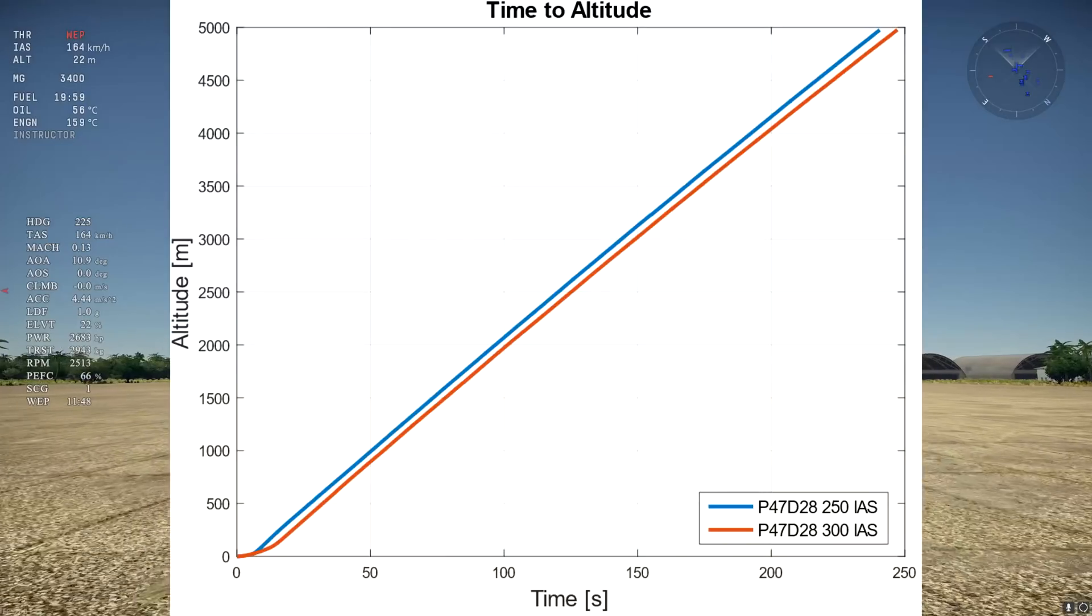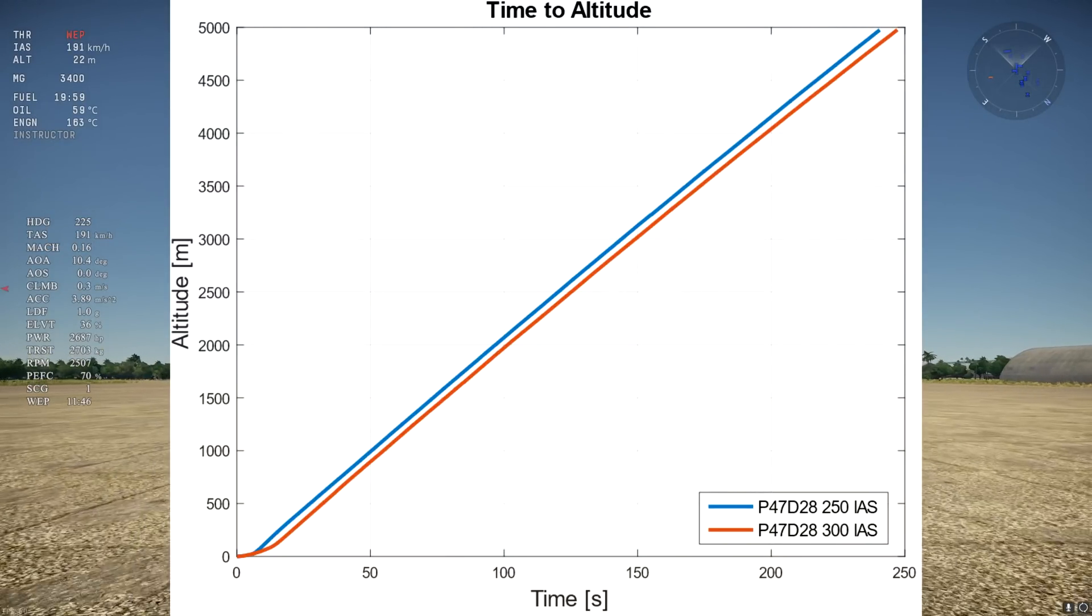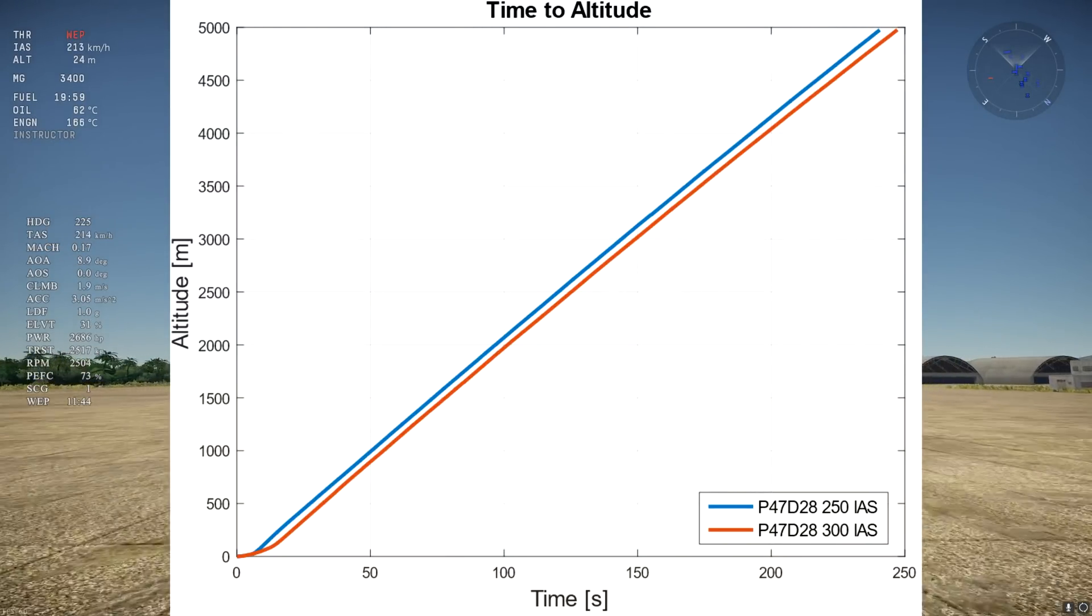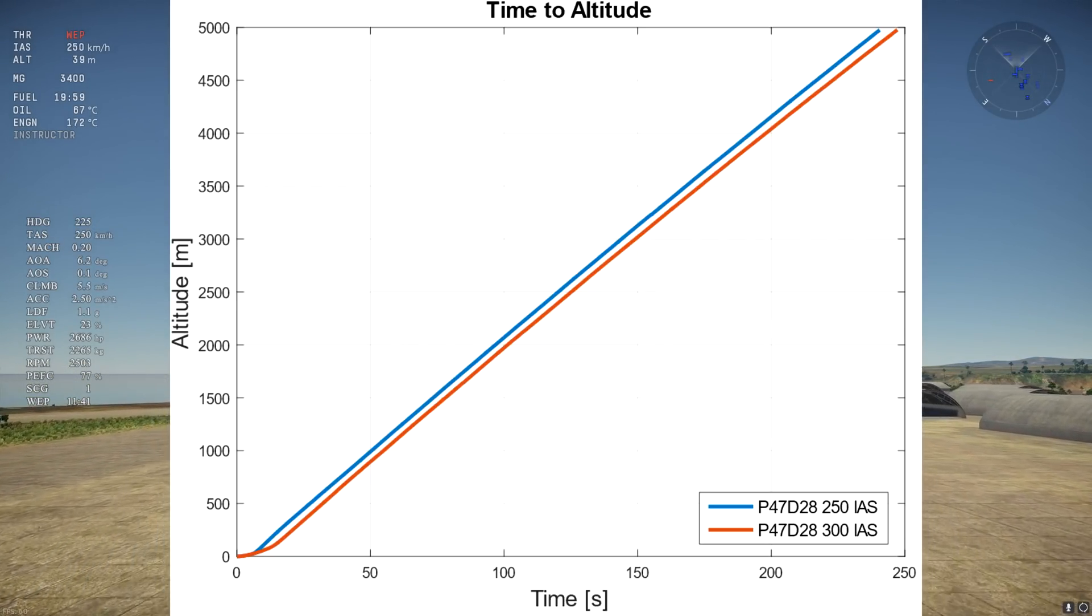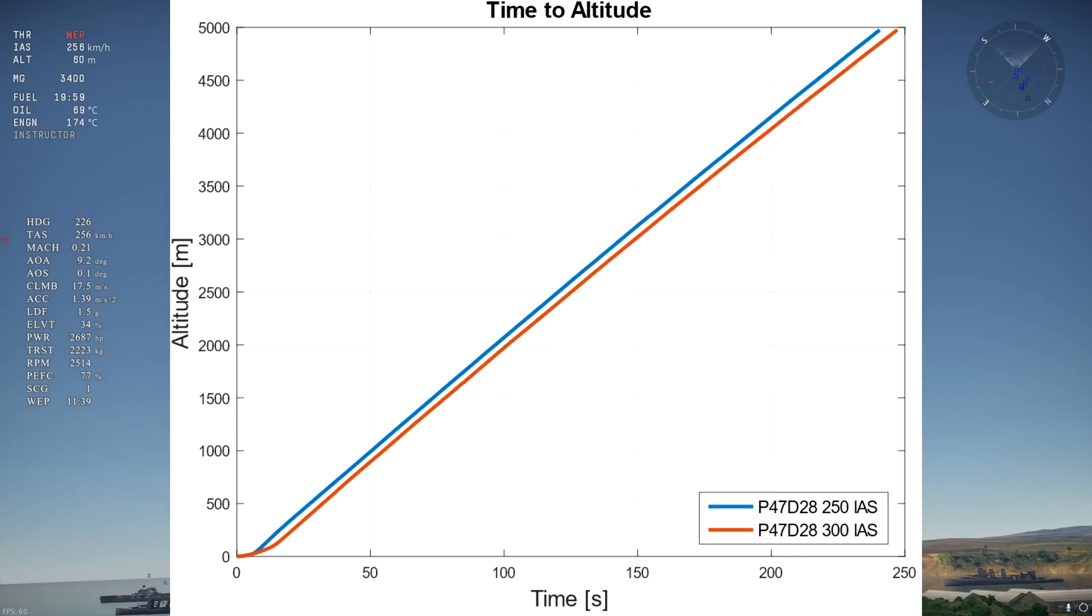Let's begin by taking a look at this graph. This is a graph of the altitude as a function of time for the P47D28 at two different climb speeds, 250 IES in blue and 300 IES in red. The time starts ticking at 206 IES shortly after takeoff in both cases.